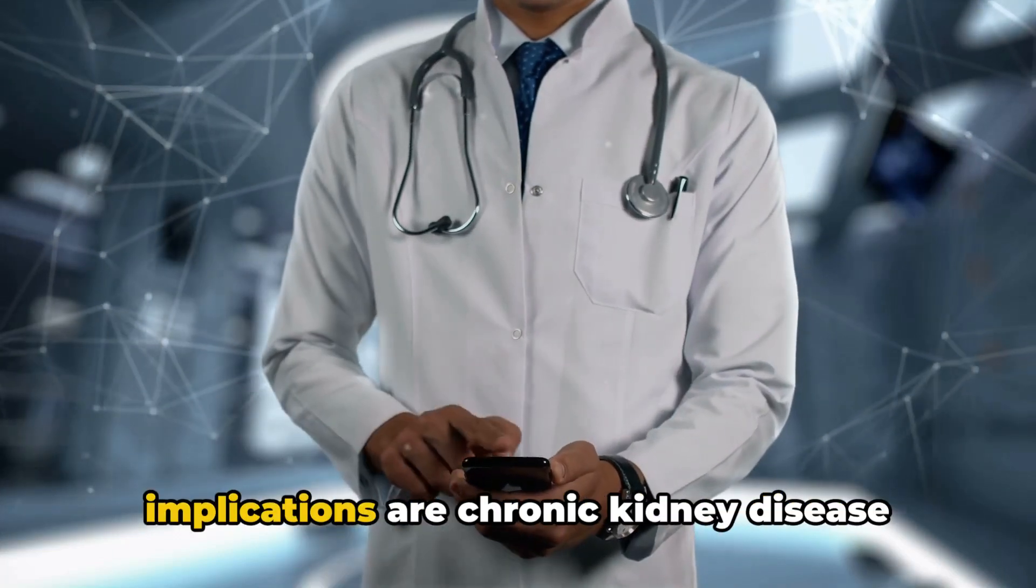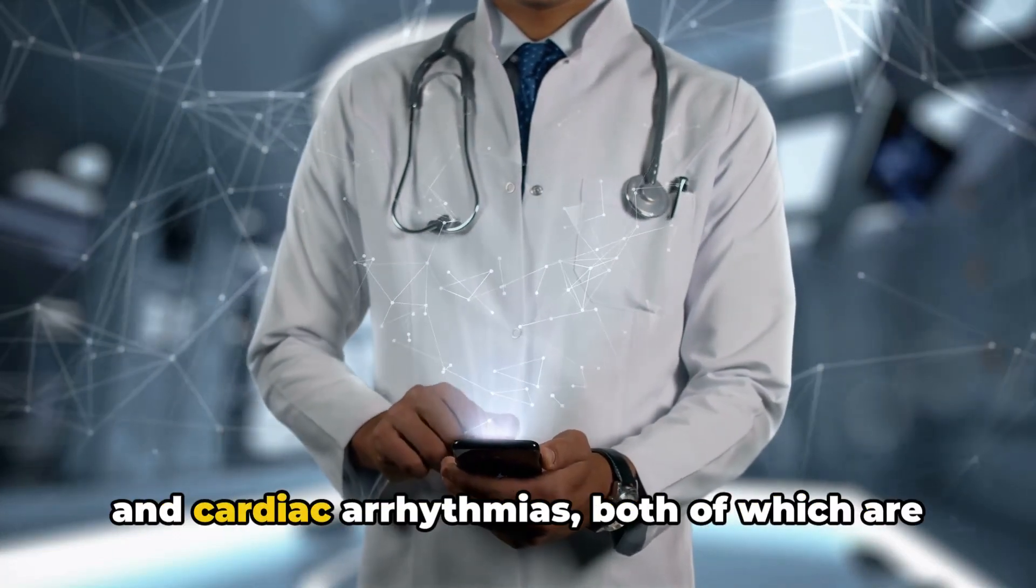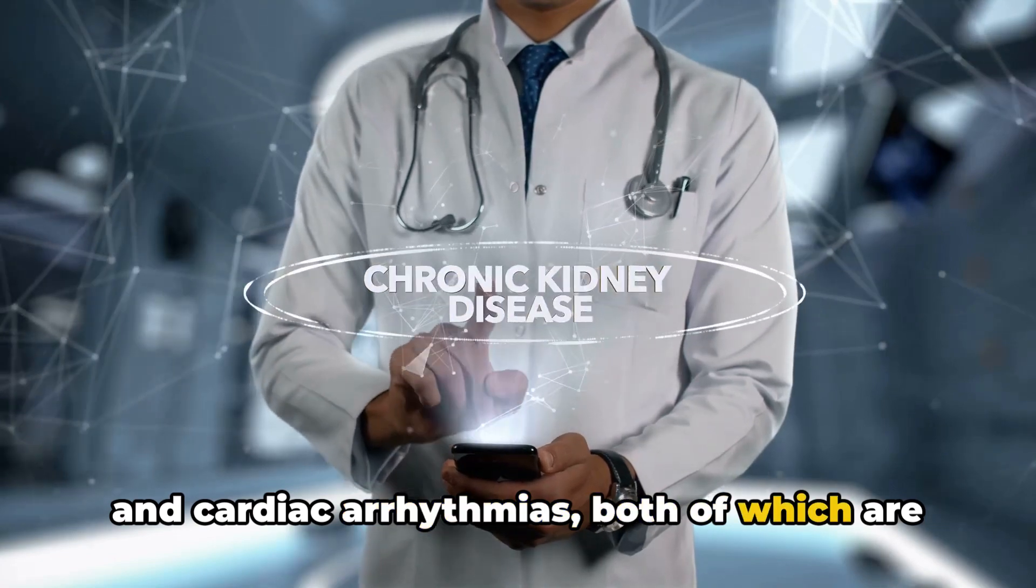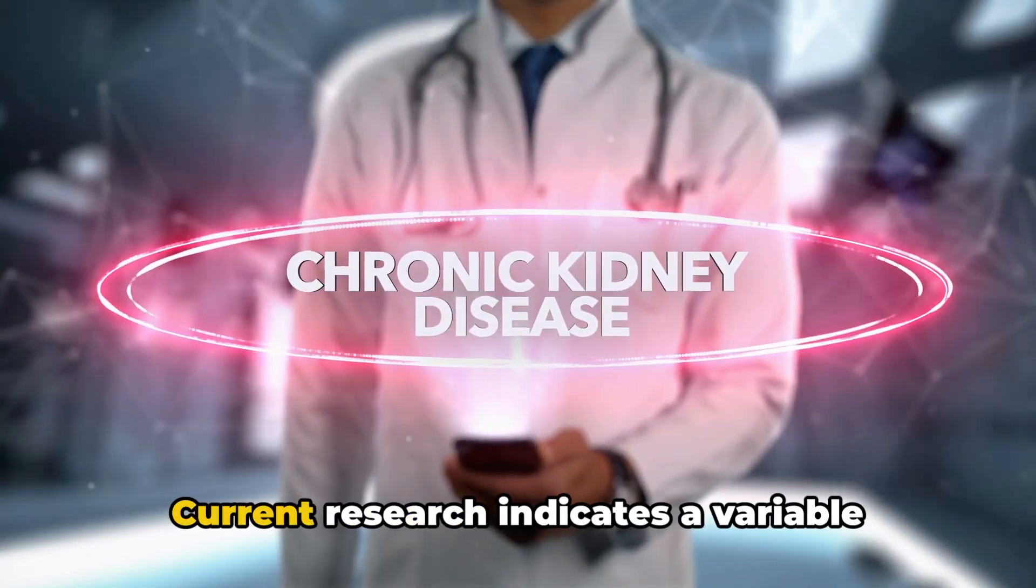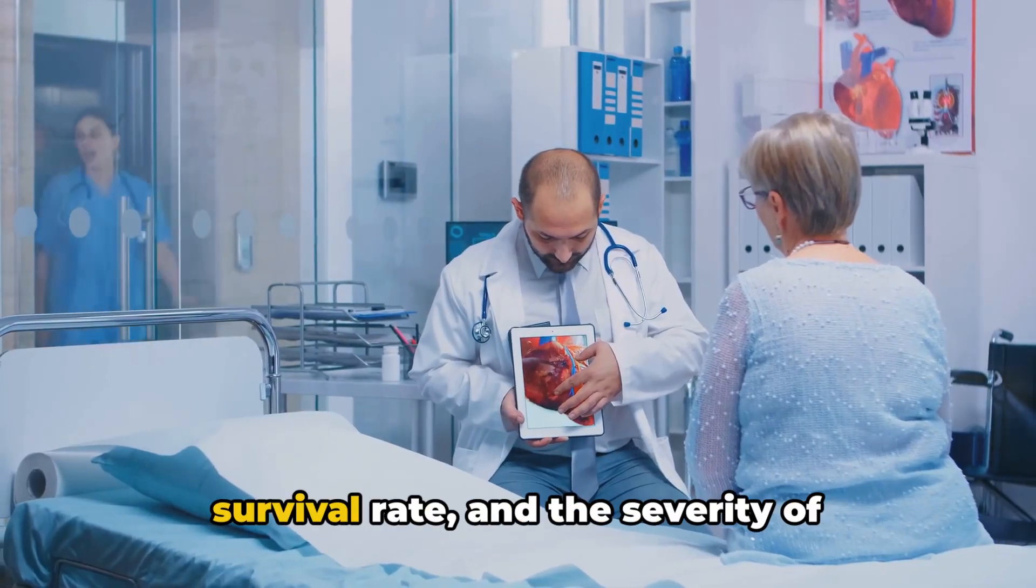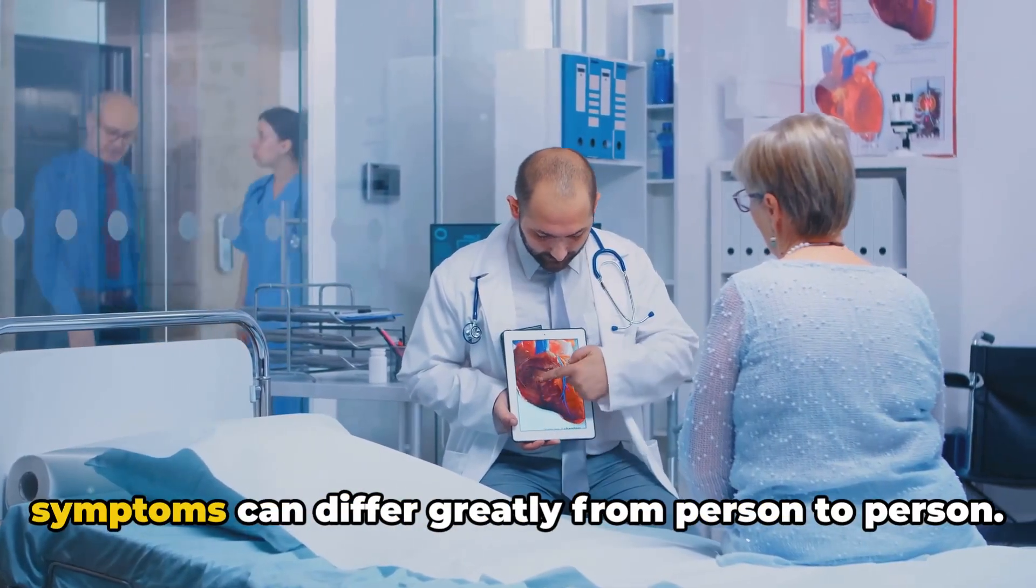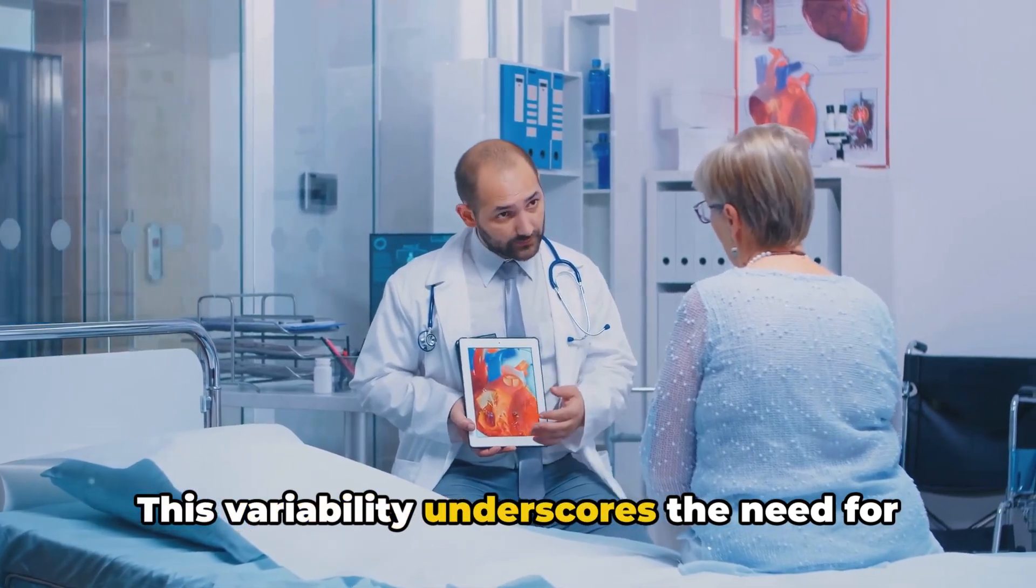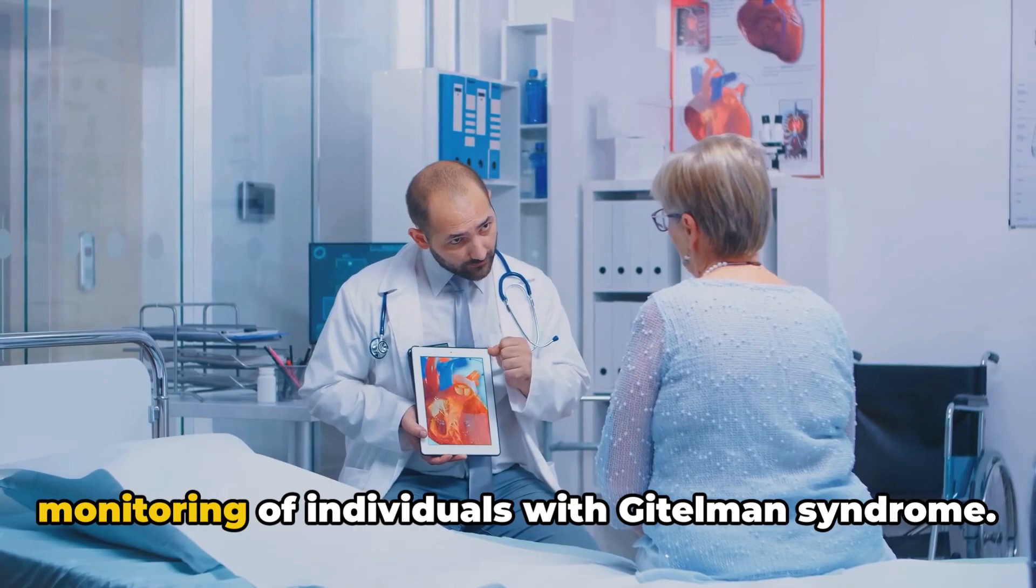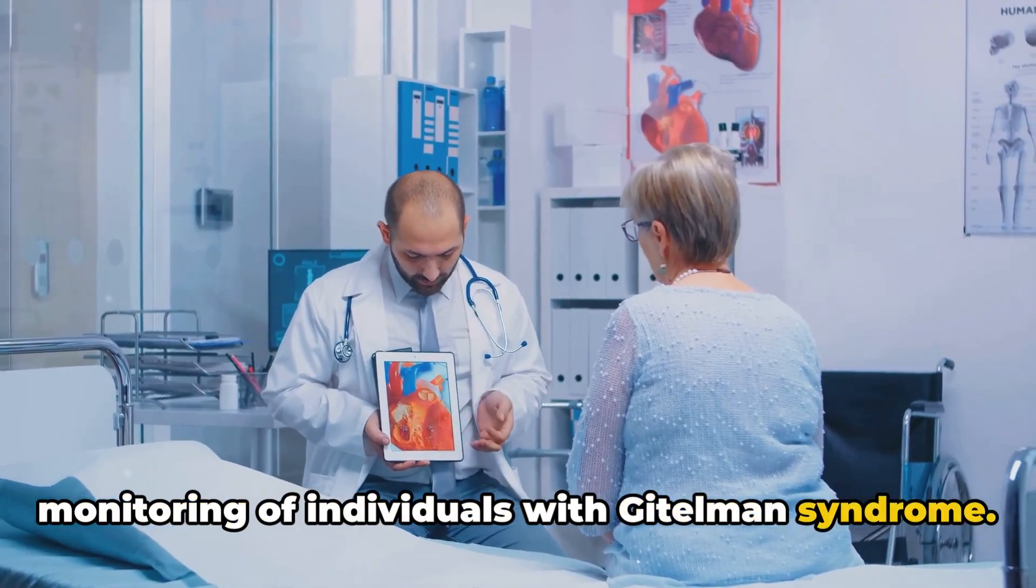The most common of these potential implications are chronic kidney disease and cardiac arrhythmias, both of which are linked to the kidney's impaired ability to balance electrolytes. Current research indicates a variable survival rate, and the severity of symptoms can differ greatly from person to person. This variability underscores the need for personalized treatment plans and vigilant monitoring.